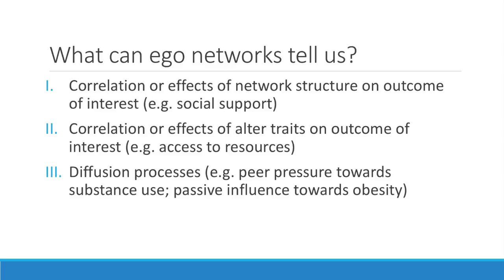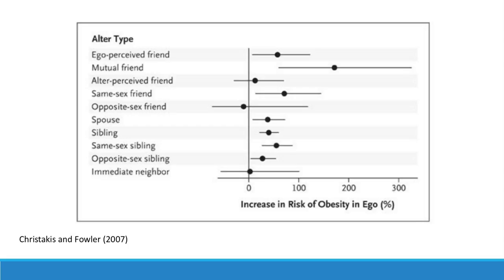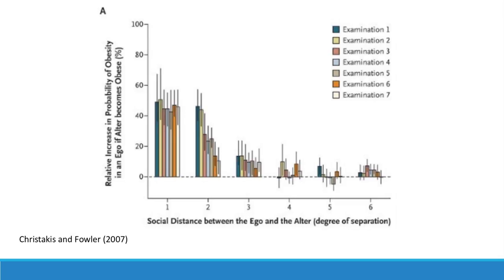Ego networks can also tell you about diffusion processes. A common example is peer pressure towards substance use, delinquency, or passive influence towards obesity. This is from the Framingham study — a famous paper by Christakis and Fowler — showing that the type of alter you have and their obesity will have different effects on you. A mutual friend is much more likely to influence you than an opposite-sex friend. Furthermore, friends of friends can even influence you: a distance of two means a friend of a friend, and their level of obesity is associated with your level of obesity.